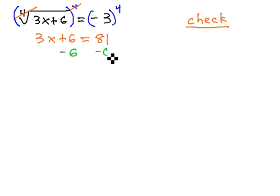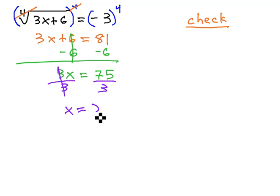And then solving the two-step equation, subtracting 6 from both sides gives us 3x equals 75. And finally, dividing both sides by 3 will give us our final answer of x equals 25.